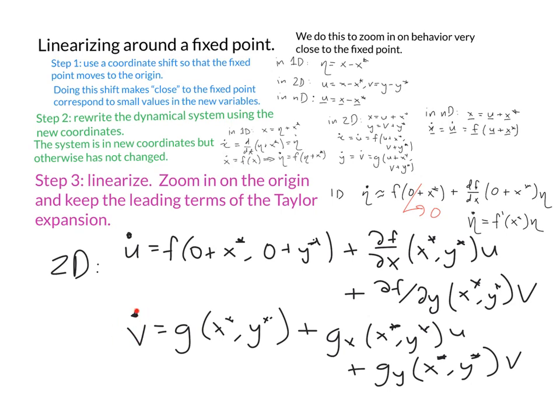And we do the same thing for v̇. It's g evaluated at (u,v) = (0,0), which ends up being g evaluated at the fixed point, and then g_x times u plus g_y times v. So these are the linear approximations to the functions when we're in 2D, when we have two variables.